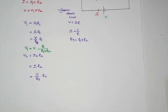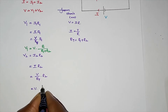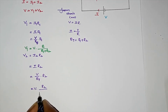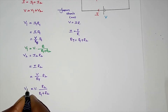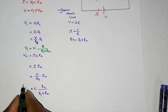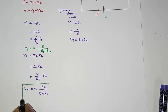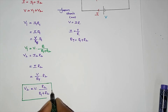Similarly, for V2, the total resistance gives us V2 equal to R2 divided by R1 plus R2, multiplied by the total voltage. This is the V2 value.